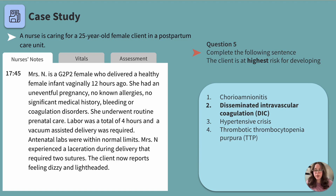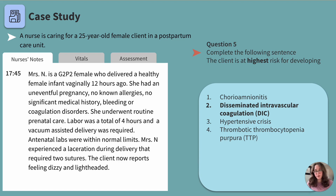Let's review why the other choices are incorrect. Chorioamnionitis is an infection of the placenta and amniotic fluid, commonly associated with prolonged labor or premature rupture of membranes — neither of which were reported with this client. Hypertensive crisis would not be anticipated since this client is already experiencing hypotension; it would also be unusual to see hypertensive crisis alongside postpartum hemorrhage, which causes hypotension. TTP is a rare disorder characterized by abnormal blood clotting and is not a typical complication of postpartum hemorrhage.